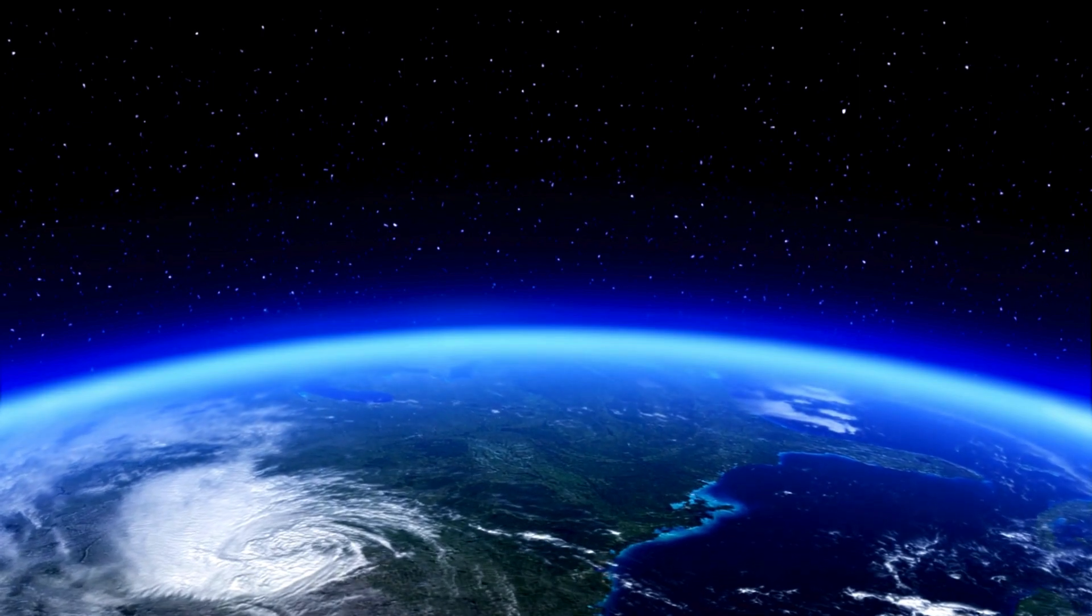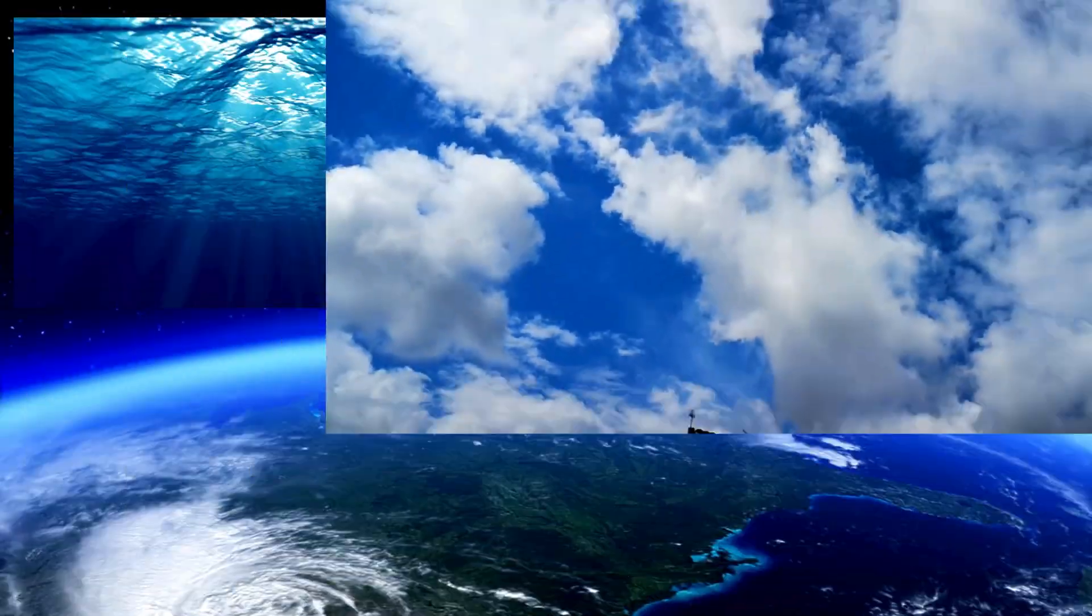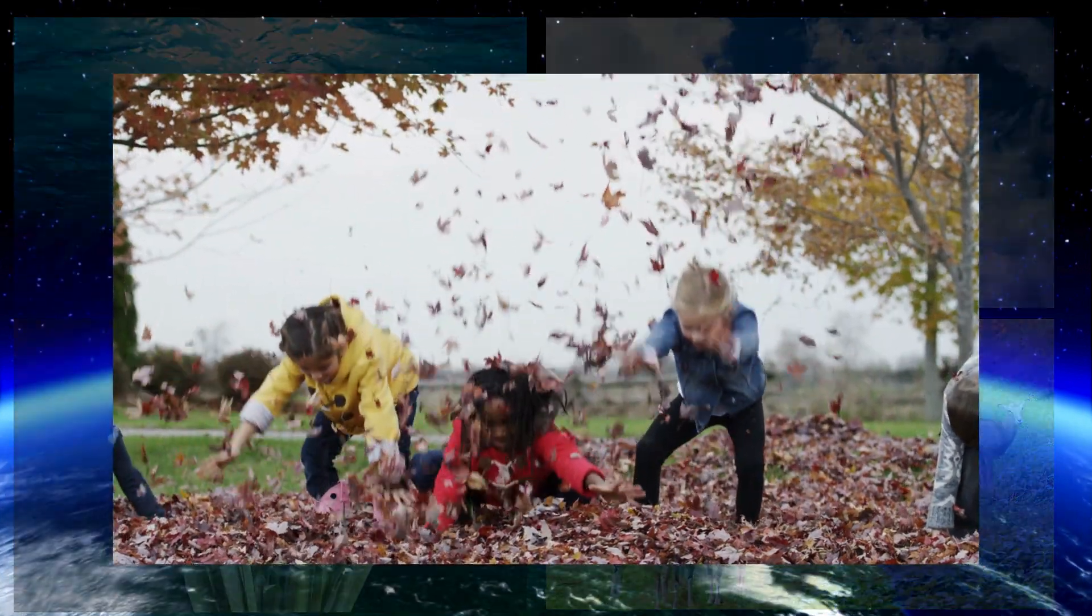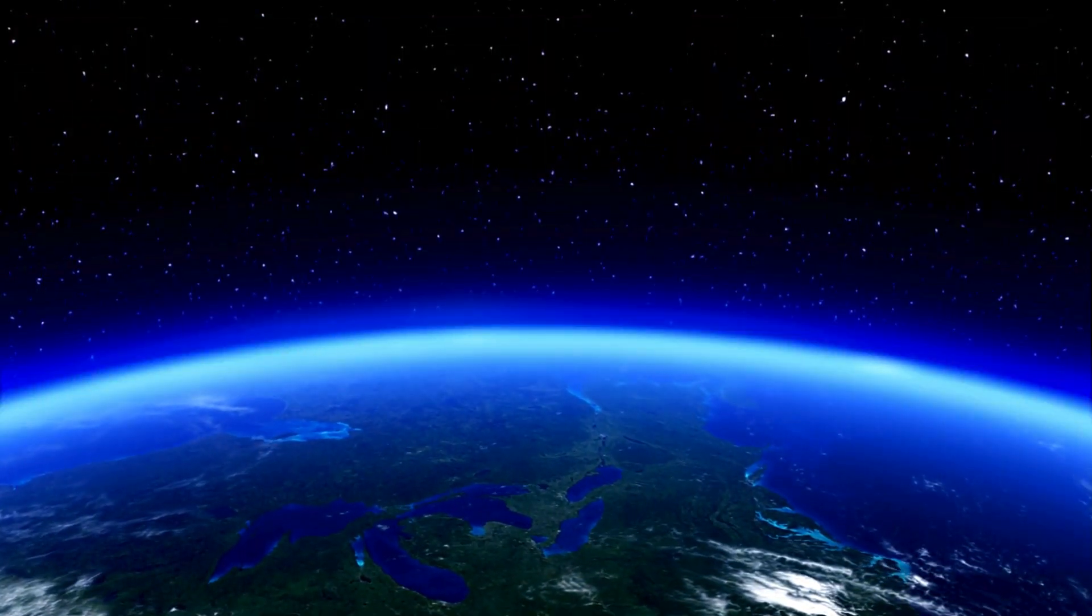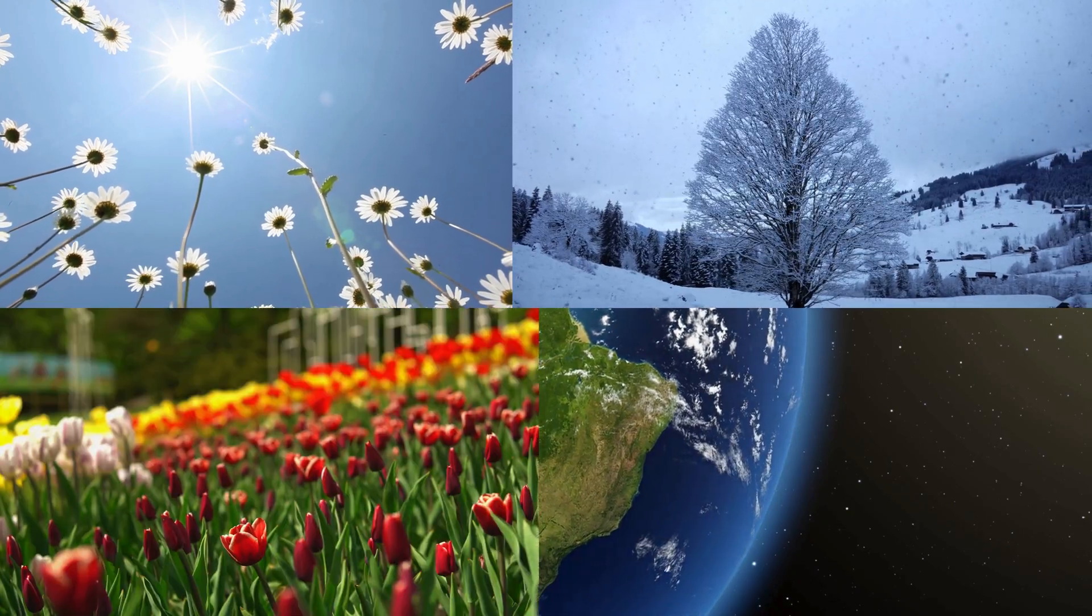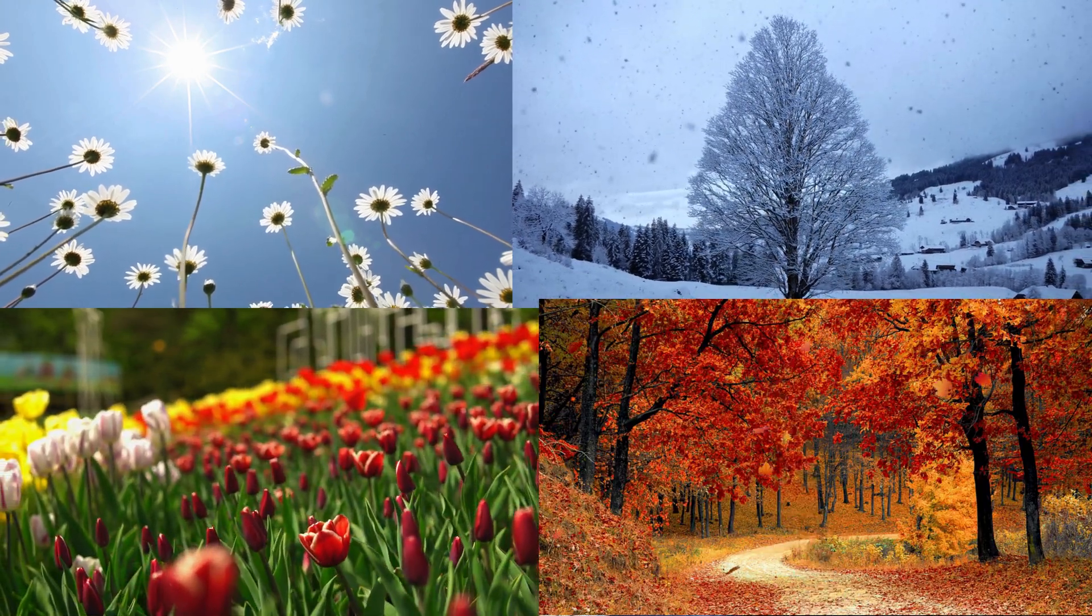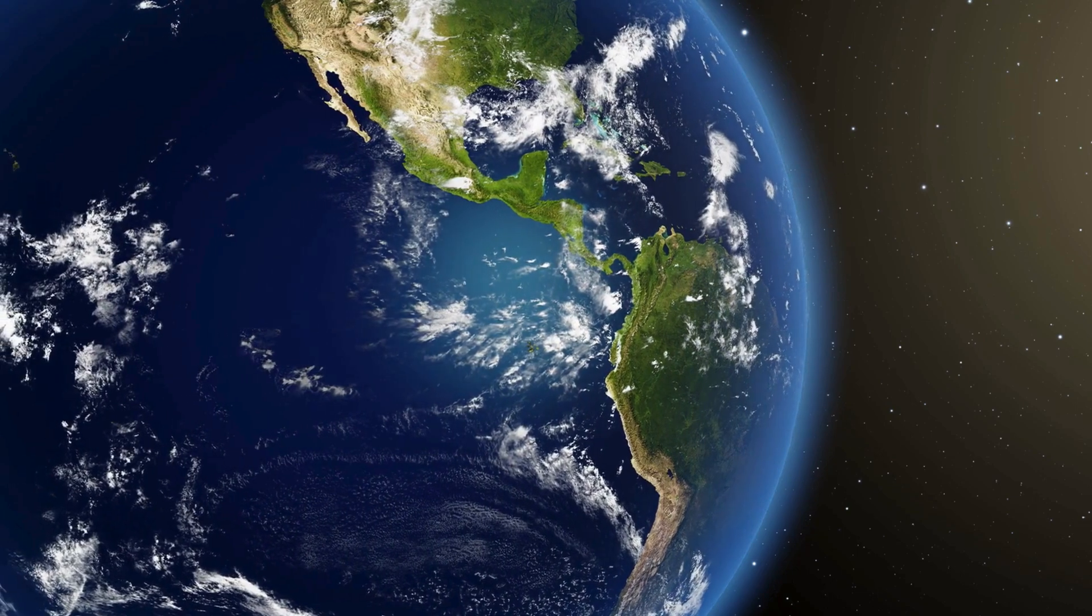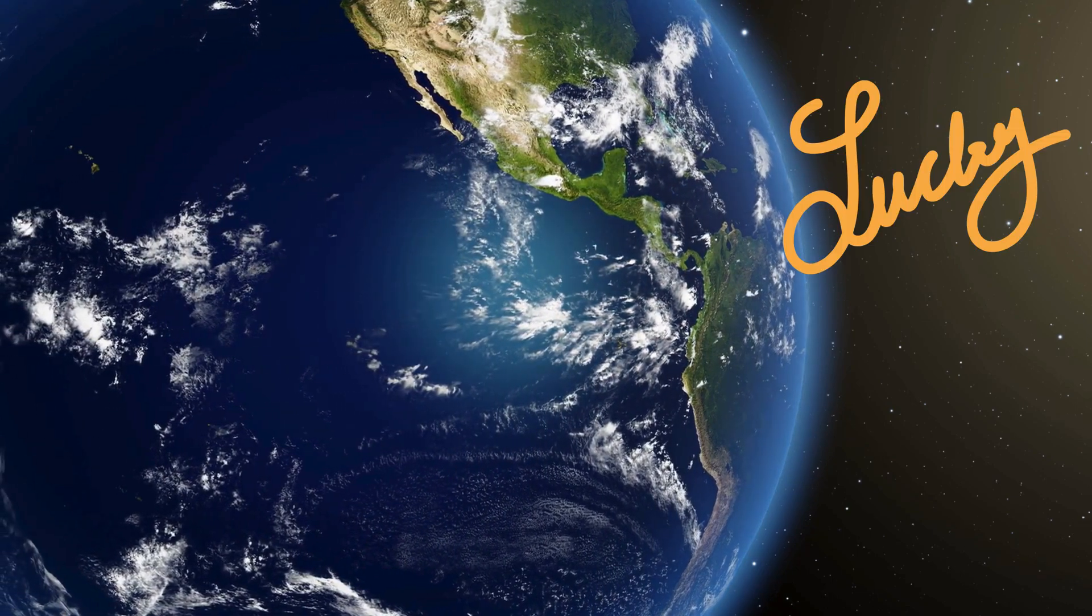Our planet is unique, because it has liquid water, air to breathe, plants, animals, and humans like us. The Earth is mostly covered in water, giving it that beautiful blue color from space. It also has seasons - summer, winter, spring, and fall - thanks to the way it tilts on its axis as it spins around the sun. We're pretty lucky to live on Earth, don't you think?